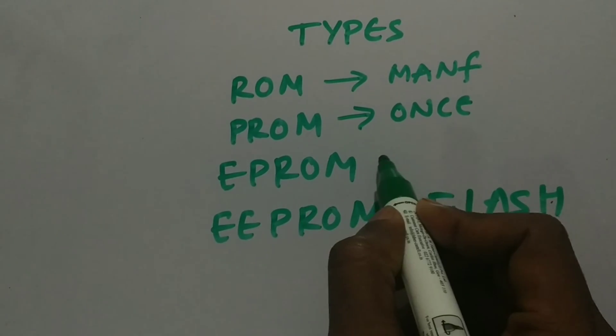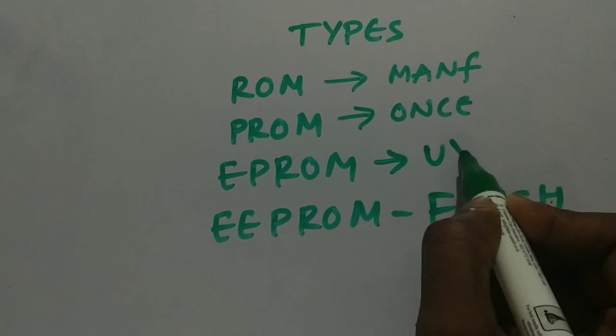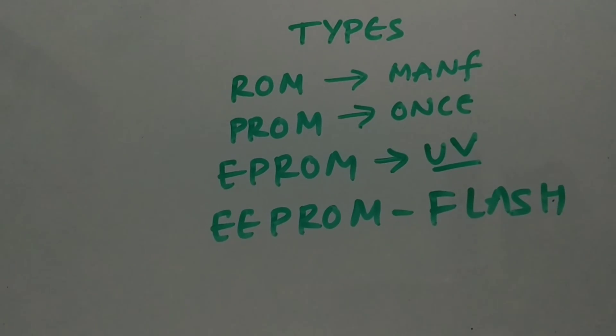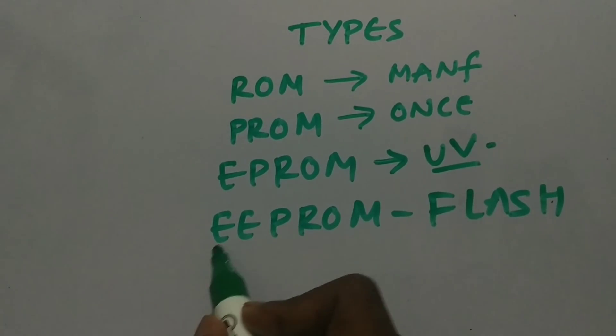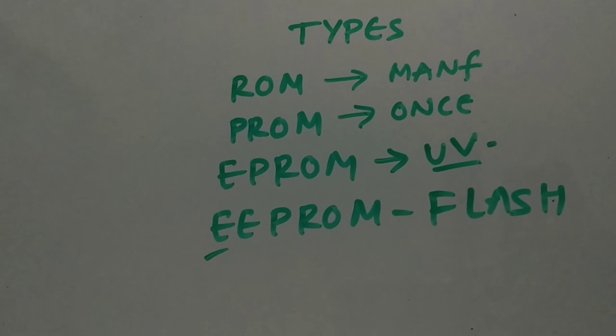So we got erasable PROM. So we can erase it by UV light. But UV light, we need to remove the chip and keep it in the UV light. I will discuss about EPROM in a complete different video. I will discuss how it's done, how the UV lights, how it's done exactly based upon the Fowler–Nordheim tunneling and FAMOS devices will be used. And in flash memory, we will be using instead of UV light, we will be using electrical charge to change it. So this is the flash memories.